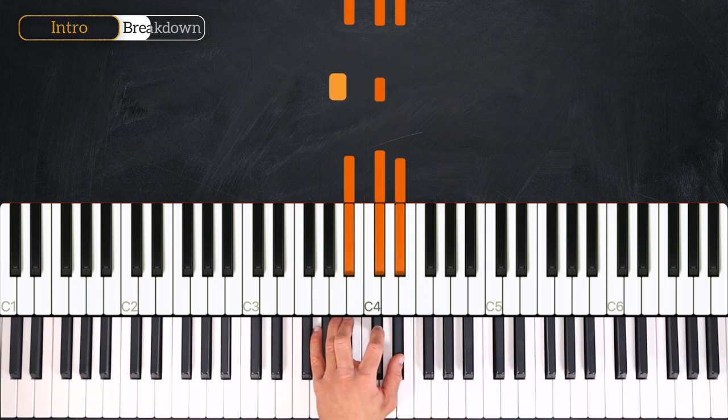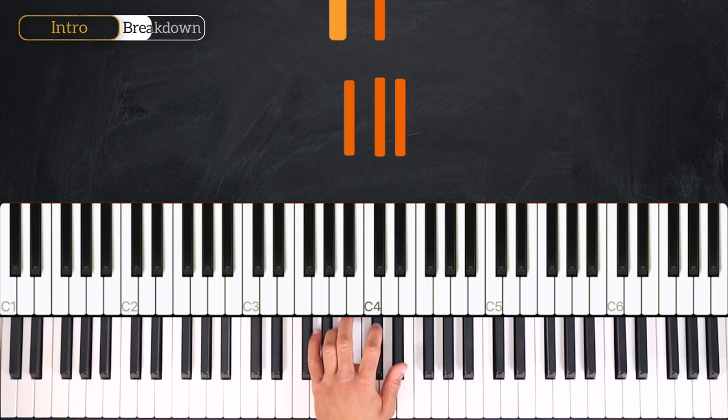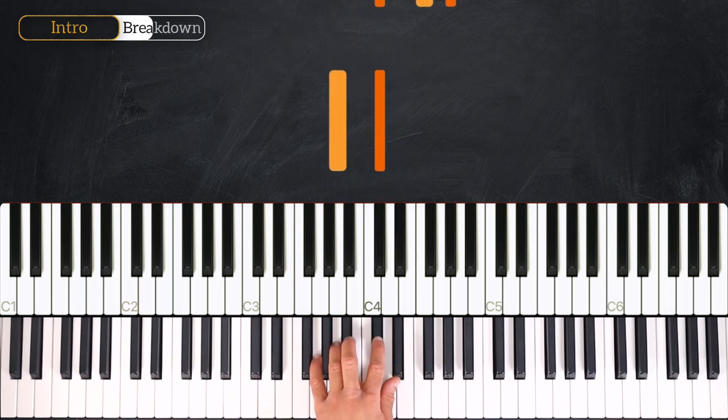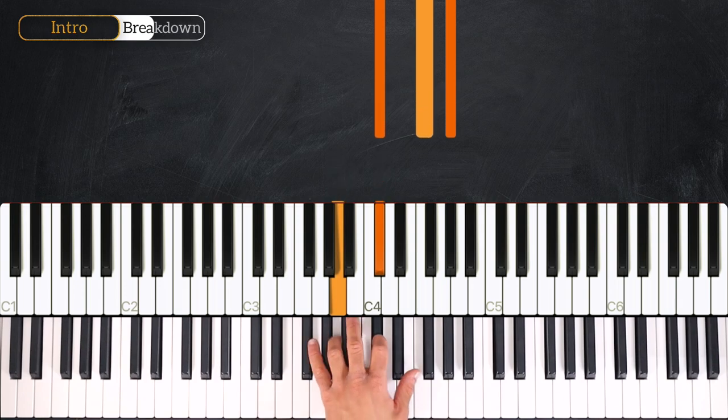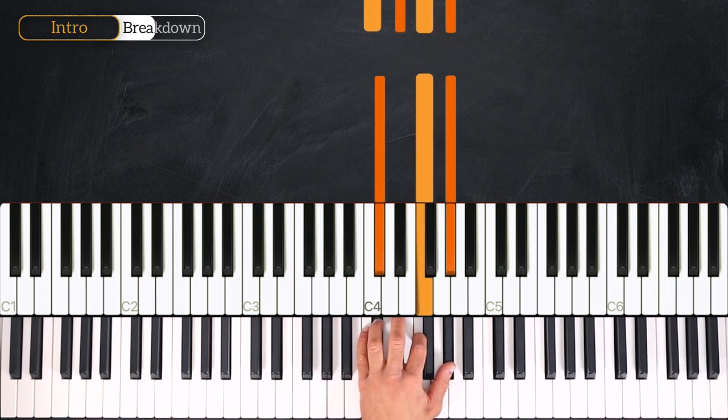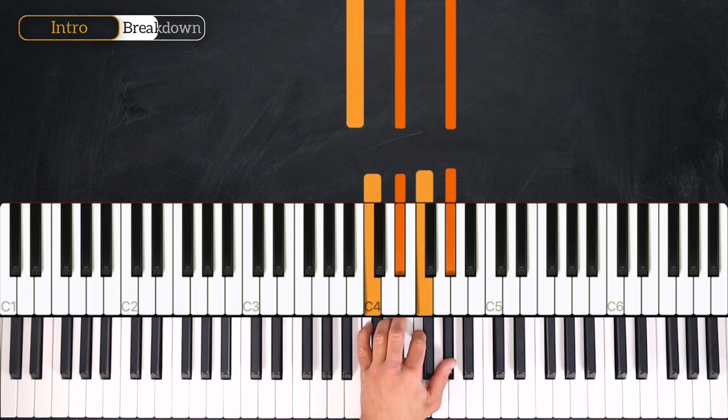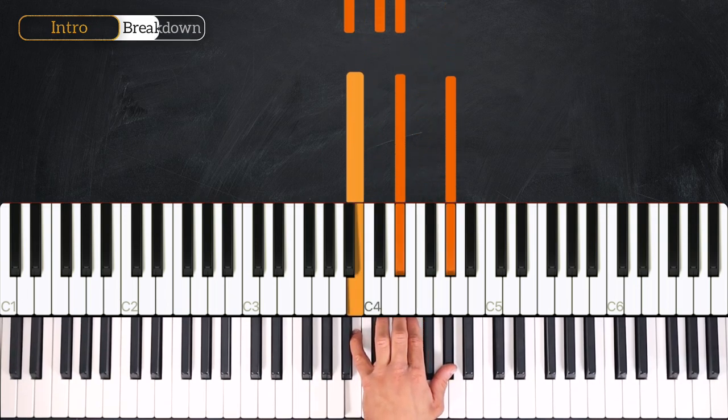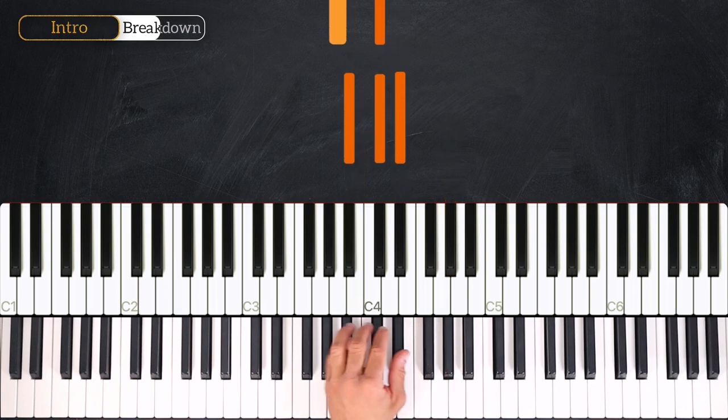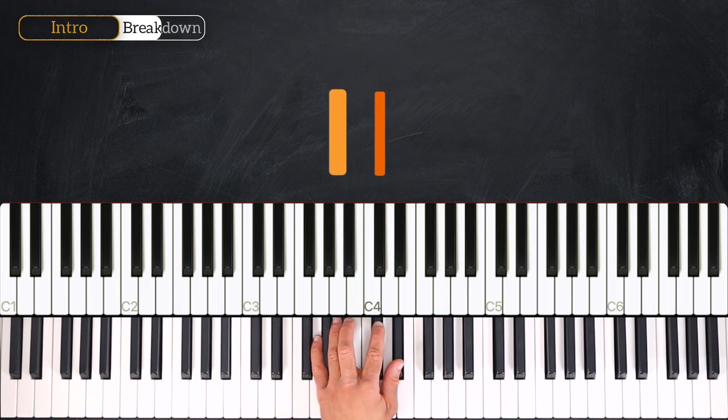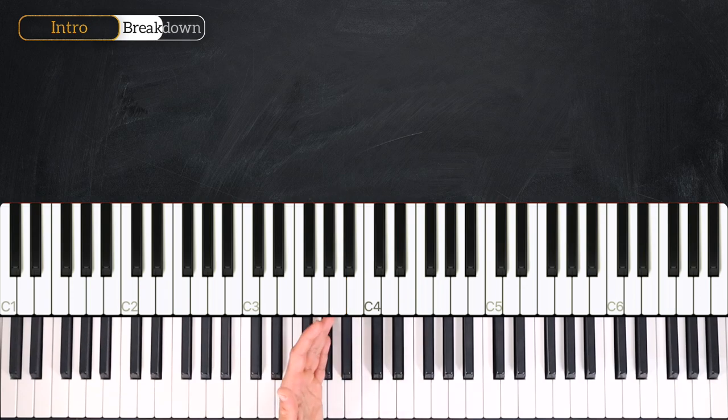And in the last bar we'll play G flat six and then G flat minor. We repeat this whole cycle once. Very good, so that's all for the left hand.